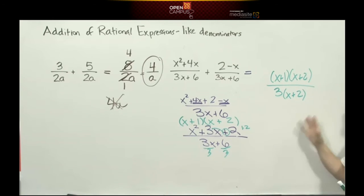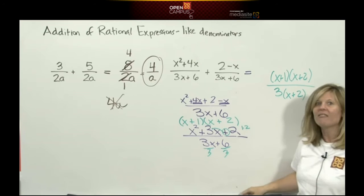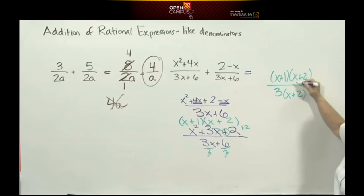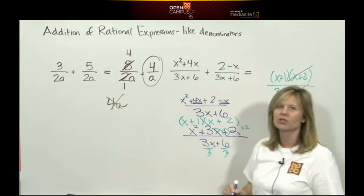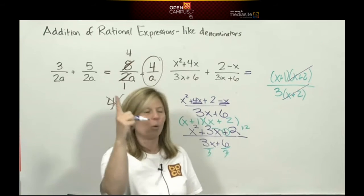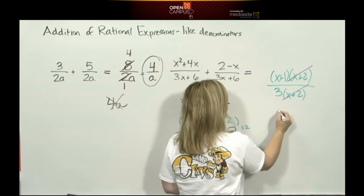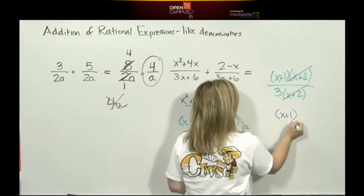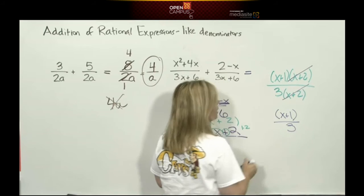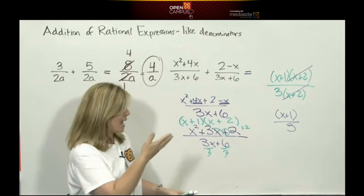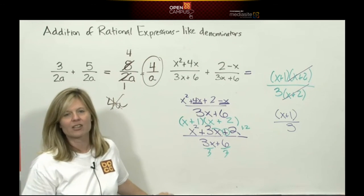Now that I've rewritten my fraction in factored form, I have like terms that are going to divide out. This binomial x plus 2 divides with this binomial x plus 2 because they're the same, they make a 1. I don't need to write the 1, so I'm left with x plus 1 in the numerator over 3. And that is how we add algebraic fractions.